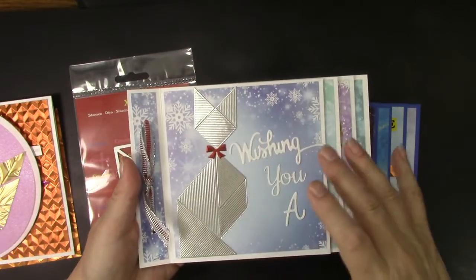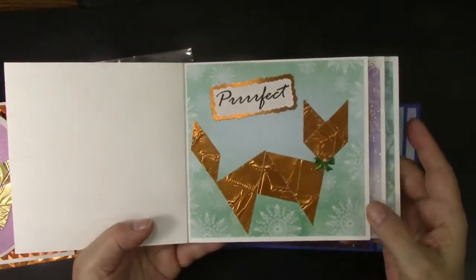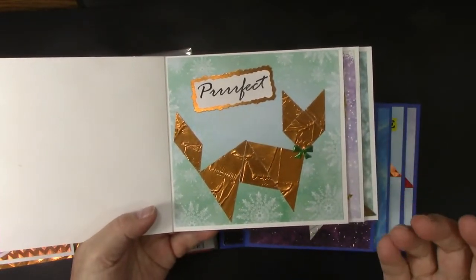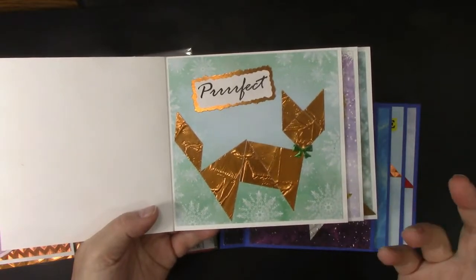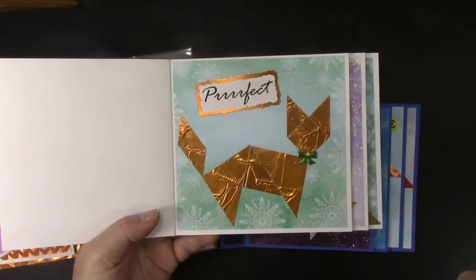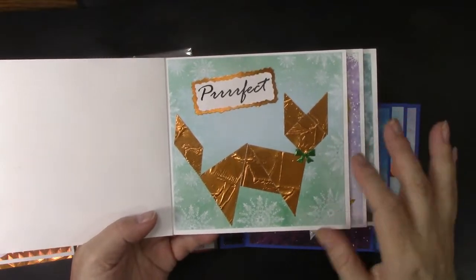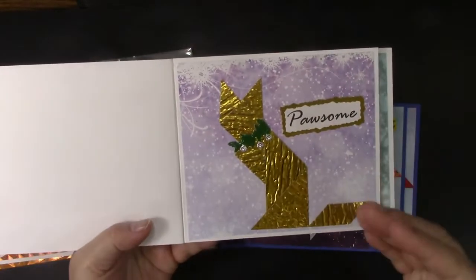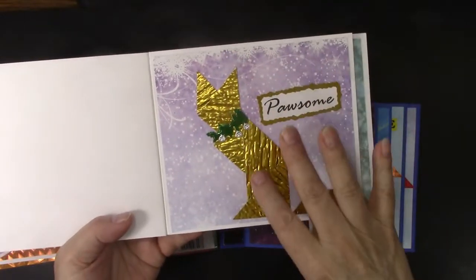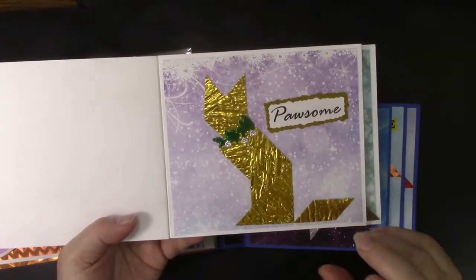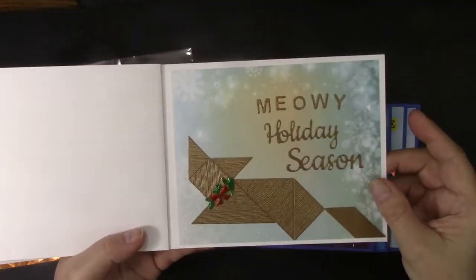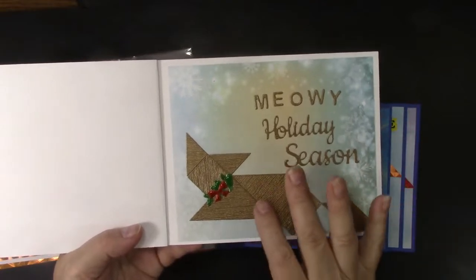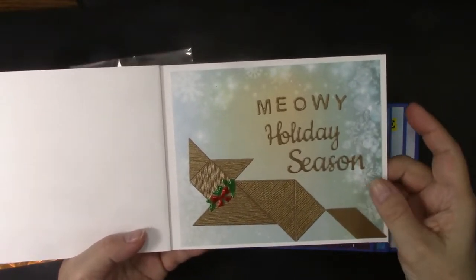So it's a four page book in essence and it has four different kitties. This one is standing up of course and I'm saying wishing you a purrfect and here's another cat. There actually was a Pinterest picture of a quilt that had like nine different cats used made with the tangram. So I chose my favorite four kitties. This one is paw-some and it's again standing up and each one is embossed with a different embossing folder and then my last one says have a meowy holiday season with a kitty laying down.